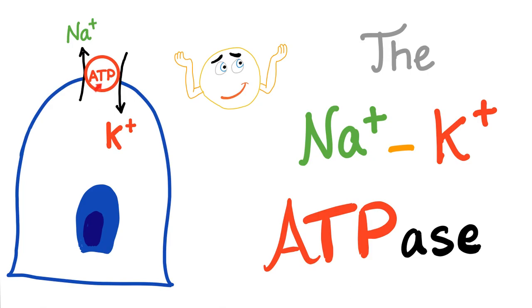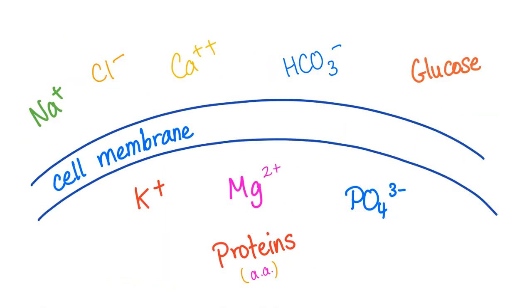It is a primary active transport — kick the sodium out and bring the potassium in. Sodium is more prevalent outside the cell, in the ECF. However, potassium is more common inside the cell, within the ICF. Have you ever wondered why? It is thanks to the sodium-potassium pump.